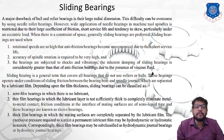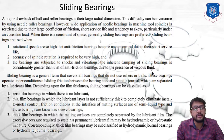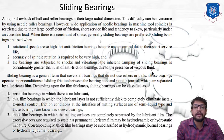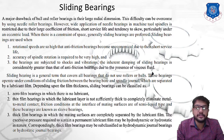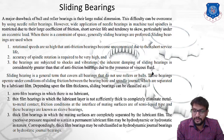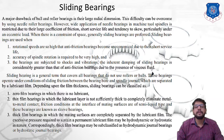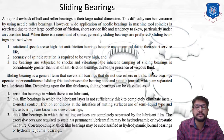When there is a constraint of space, sliding bearings are generally preferred. Sliding bearings are used under the following conditions: first, rotational speeds are so high that anti-friction bearings would need to be very large; and third, the bearings are subjected to shocks and vibrations, where the inherent damping of sliding bearings is considerably greater than that of anti-friction bearings due to the presence of viscous fluid.